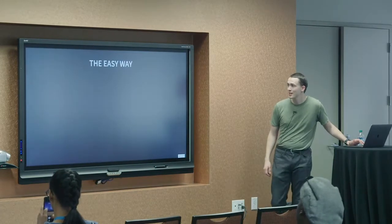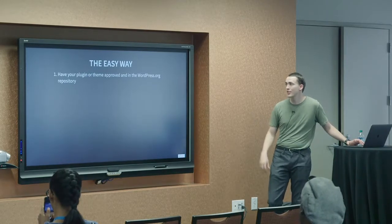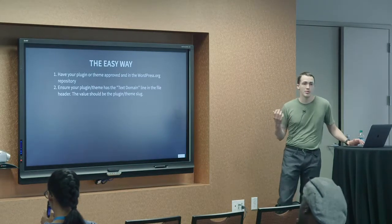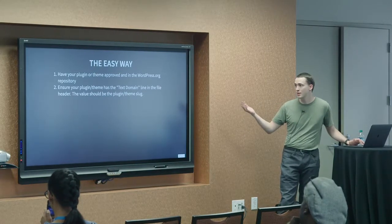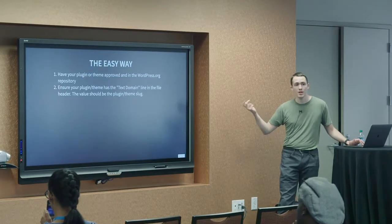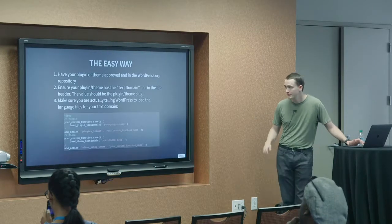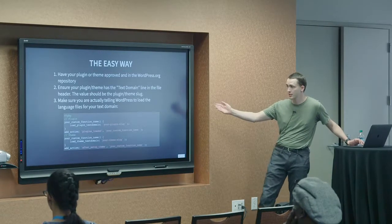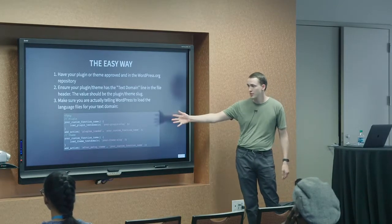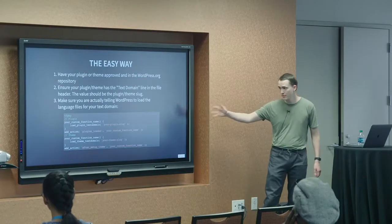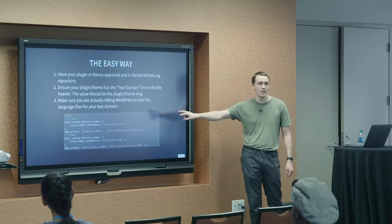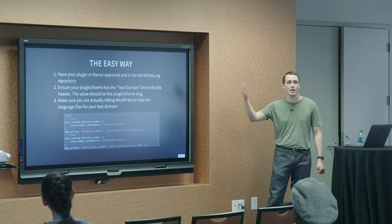So, the easy way is have your plugin or theme approved in the wordpress.org repository. And, then, you can ensure that the plugin or theme has the appropriate text domain line in the plugin or theme header and that it matches the slug for your plugin or theme on wordpress.org. And, then, you need to make sure you're actually telling WordPress to load the language files for your text domain. And, as I mentioned earlier in the talk, when you're dealing with things that are translated on wordpress.org, you can specify just the text domain if you're not including translations with your actual release.